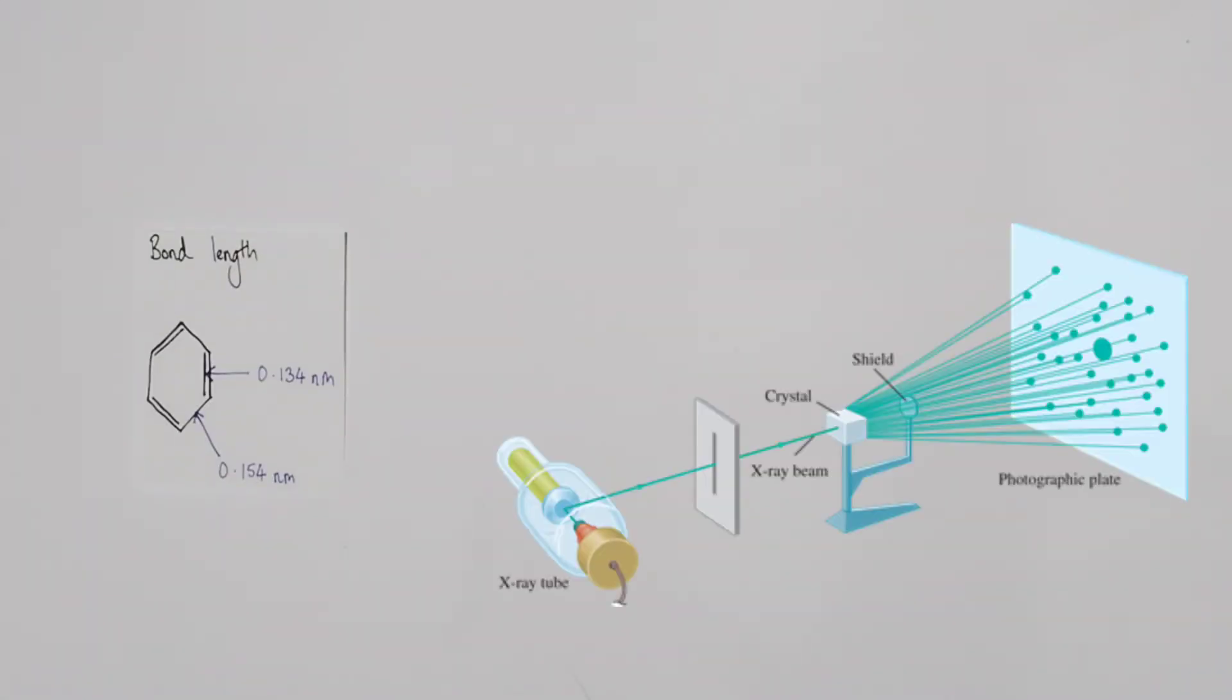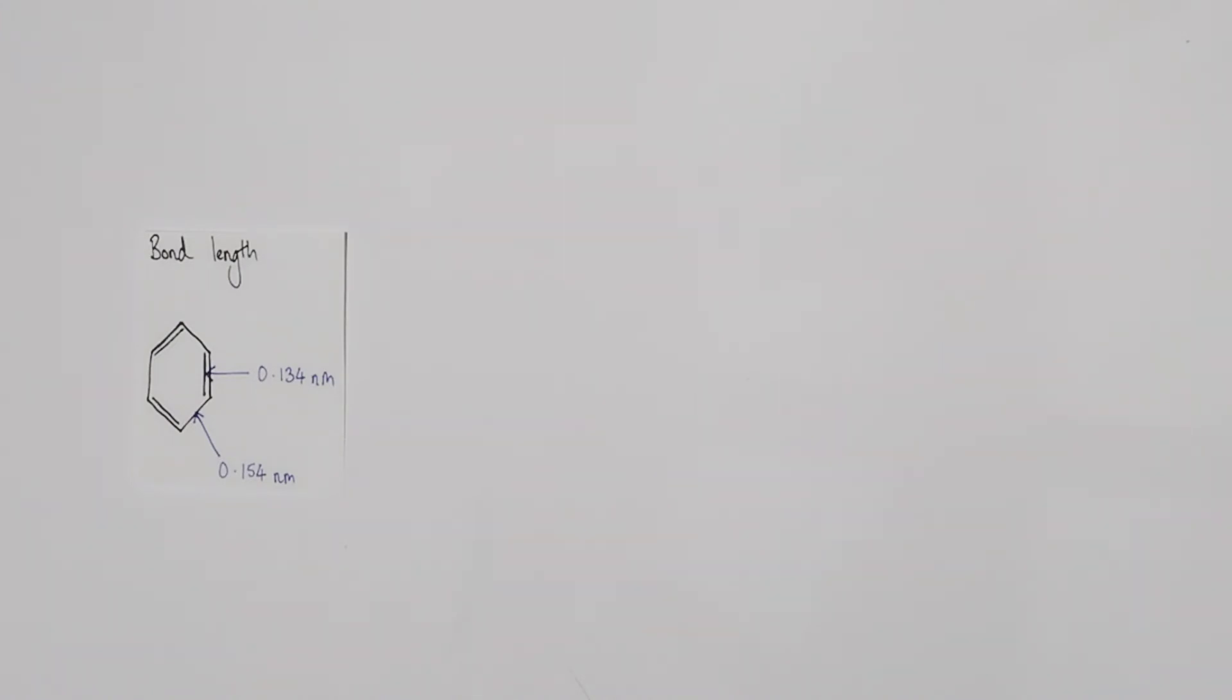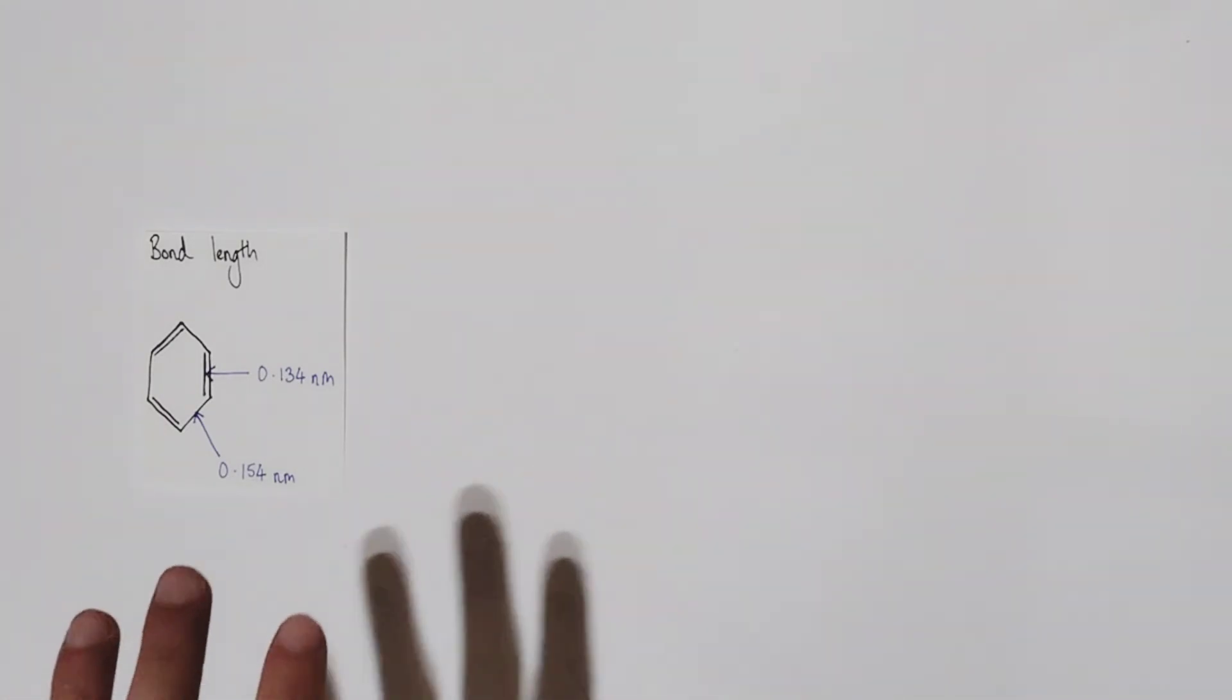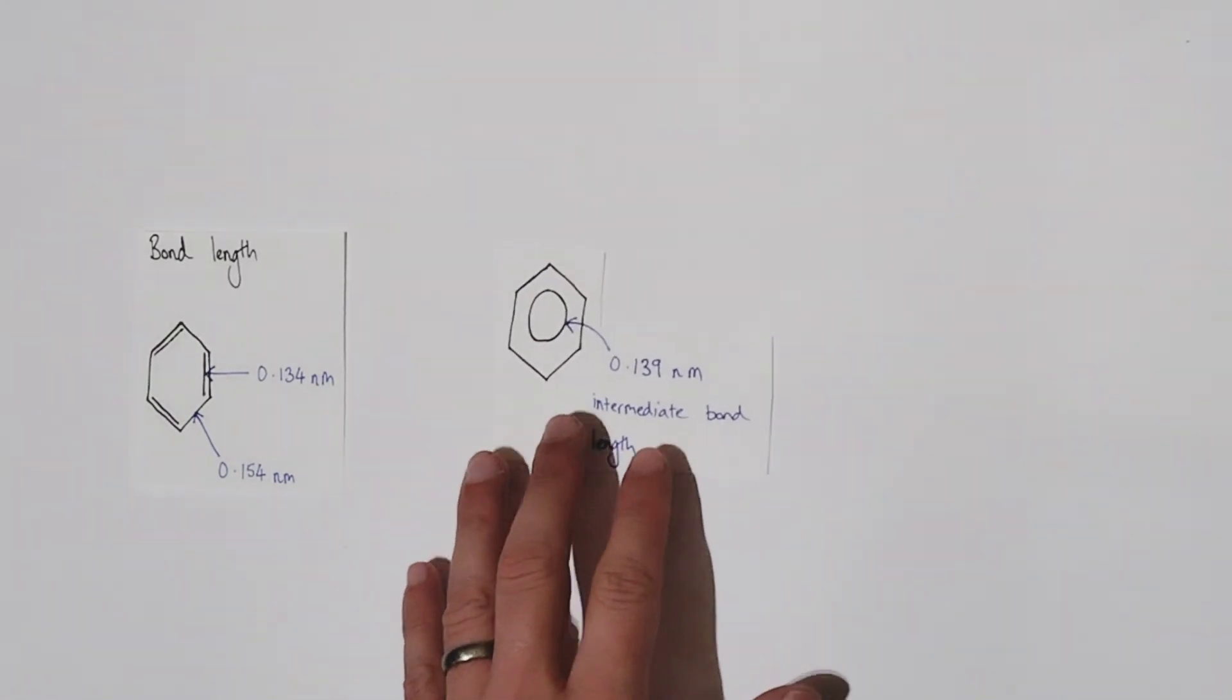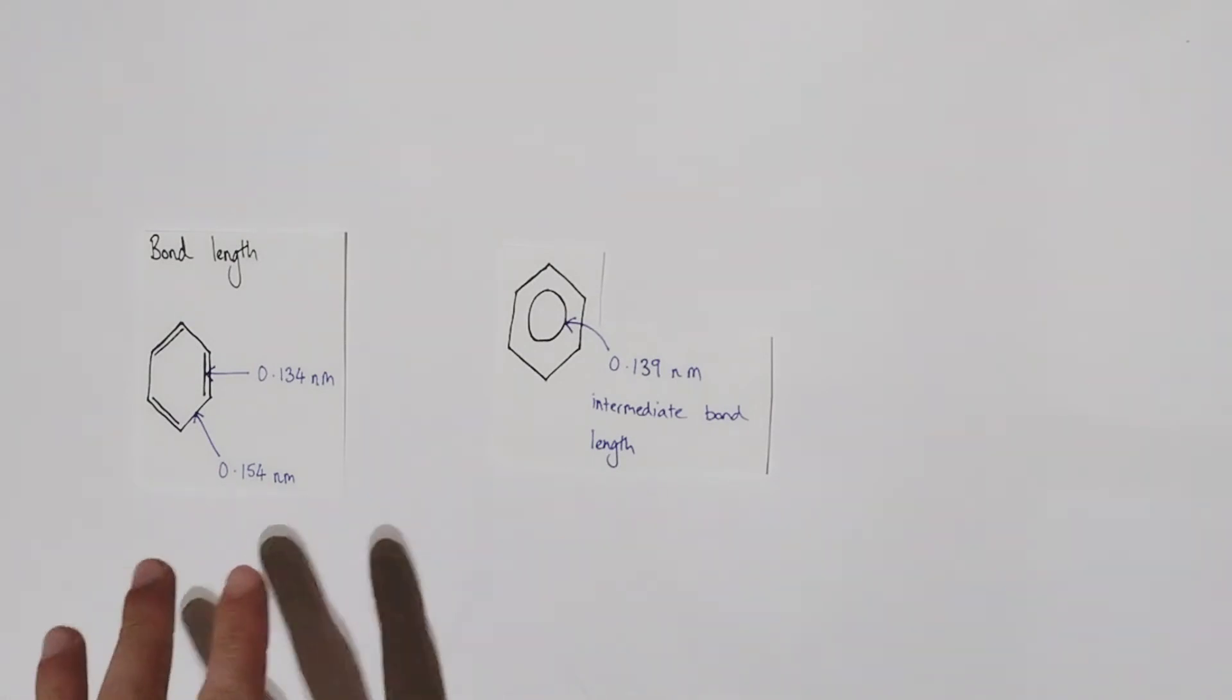Our next set of evidence comes from x-ray crystallography which provides information about the bond lengths found within various molecules. Now the bond length of a carbon-carbon double bond is approximately 0.134 nanometers and the bond length of a carbon-carbon single bond is approximately 0.154 nanometers. So if the Kekule structure were correct we'd find these alternating bond lengths within our benzene ring. However when we undertake x-ray crystallography of a true benzene ring structure we don't find either of these bond lengths. Instead we find the bond length is approximately 0.139 nanometers. Now this is intermediary between the other two bond lengths and that's helping to provide supporting evidence that we don't have an alternating single and double bond structure. Instead we have our extended pi bonding delocalized ring structure which gives this bond length instead.